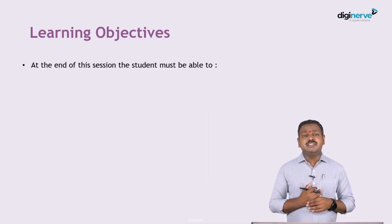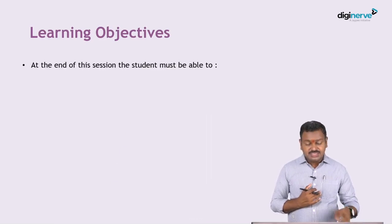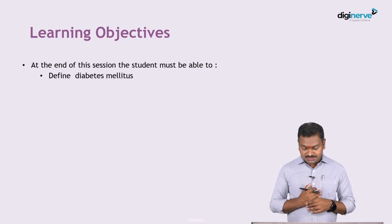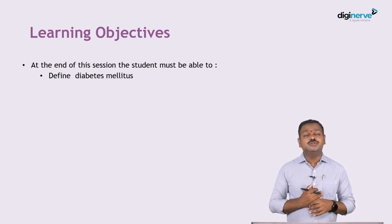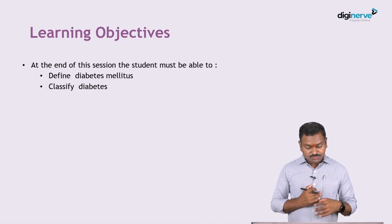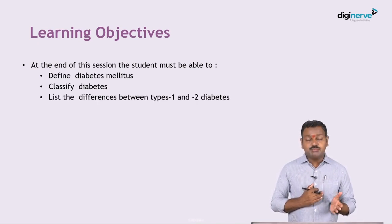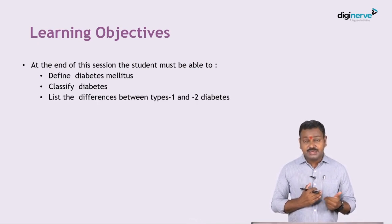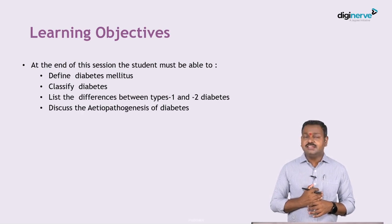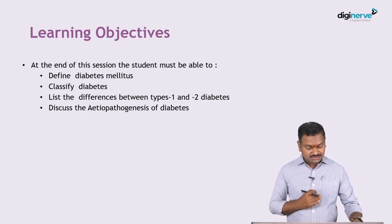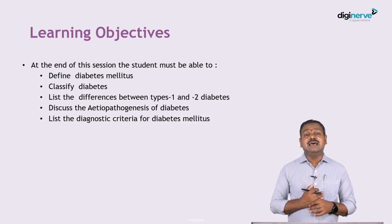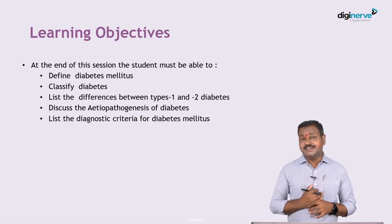The learning objectives for this session: at the end of the session the student must be able to define diabetes mellitus, classify diabetes, list the differences between type 1, type 2 and other types of diabetes, discuss briefly the etiopathogenesis of diabetes, and list the diagnostic criteria for diabetes mellitus.